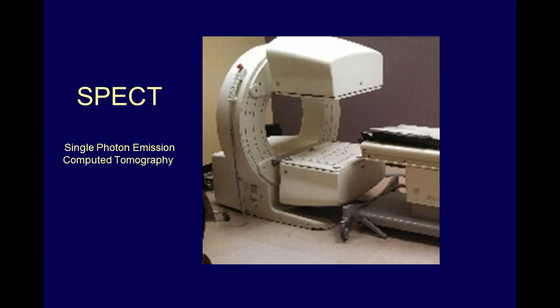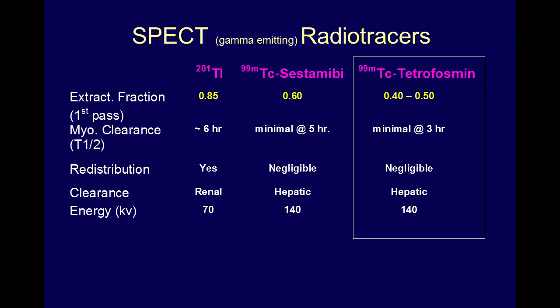SPECT stands for Single Photon Emission Computed Tomography — essentially a fancy name for imaging a photon. Photon-emitting tracers are gamma-emitting tracers, and the three gamma-emitting tracers are thallium, sestamibi, and tetrofosmin. Thallium was the first tracer. That's why people still say 'I want a stress thallium.' We stopped doing stress thalliums here in 1994.